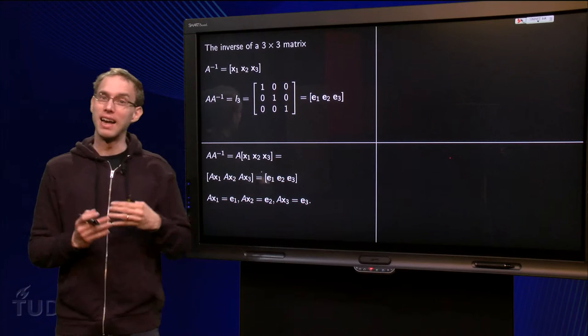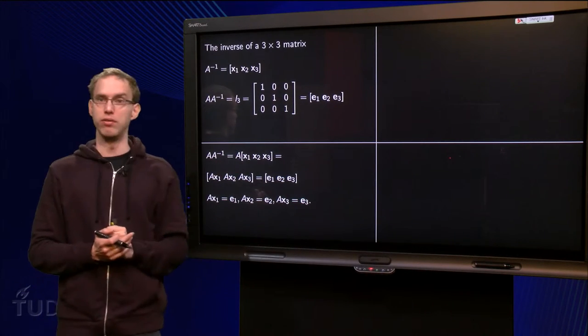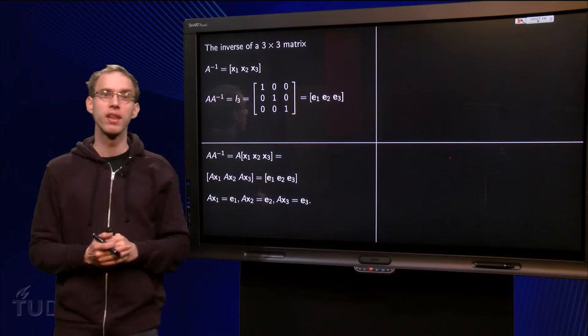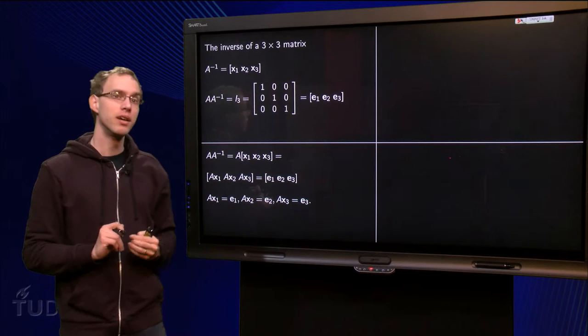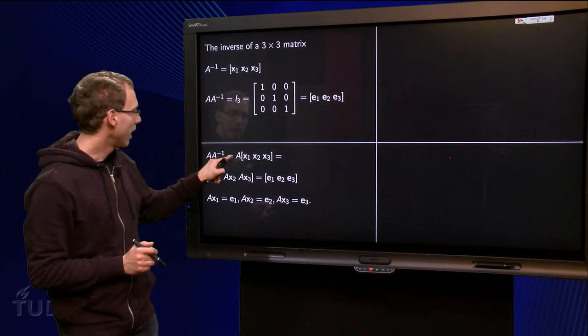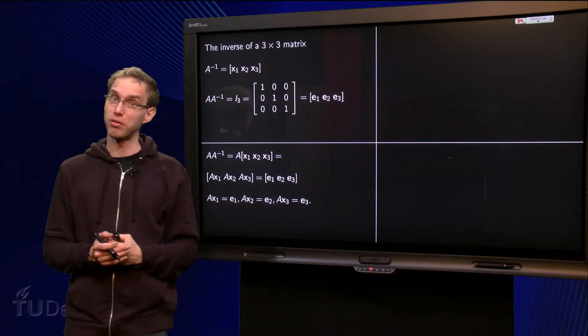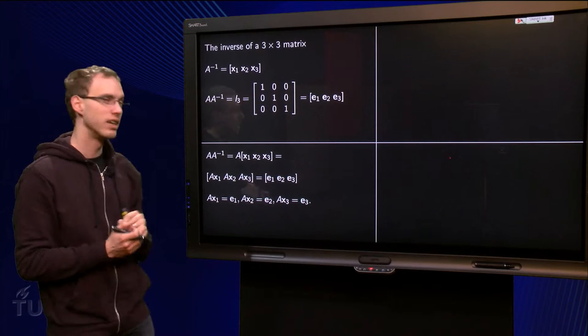When we multiply A times A inverse, we have A times A inverse here. And we know how to multiply matrix times matrix. It yields A times x1 as the first column of the product, A times x2 as the second column of the product and A times x3 as the third column of the product. So there we are.